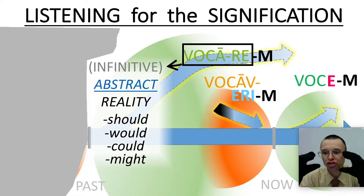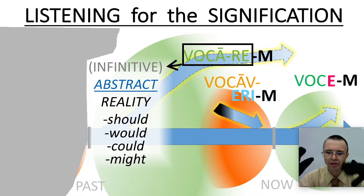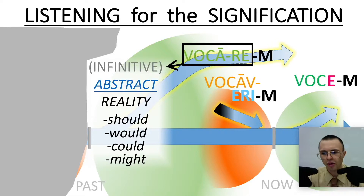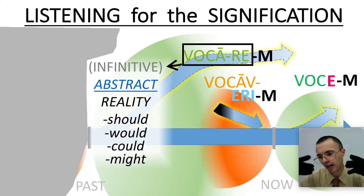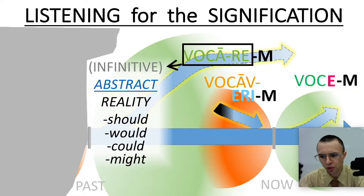It's natural when we hear an infinitive in our ear that we think 'should, would, could, might,' because should/would/could/might is also an abstract theoretical reality. Infinitives, like 'the action of calling,' naturally are conducive to this idea of shouldness, wouldness, couldness, or mightness.